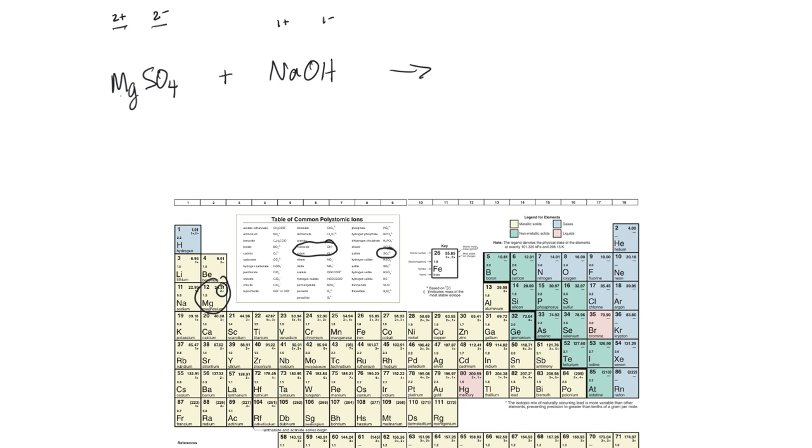In a double replacement reaction, this positive guy here, magnesium, is going to hook up instead of with this negative one, it's going to hook up with the other negative one. So I'm going to have magnesium and I'm going to have hydroxide. Now, just looking at the charges that they were before, magnesium was a two plus, and hydroxide was a one minus. So in order to balance that compound, I'm going to need to have two of these.